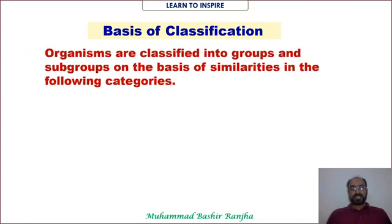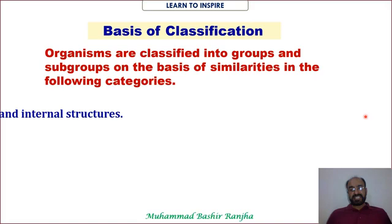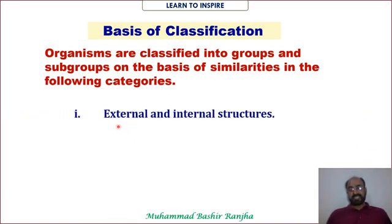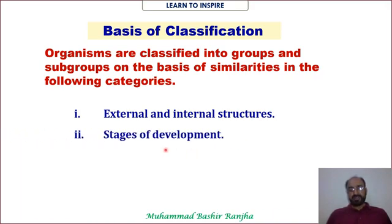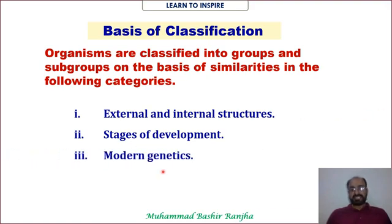Organisms are classified into groups and subgroups on the basis of similarities and differences in the following categories. Number one: external and internal structure — basically external morphology and internal morphology, i.e., morphology and anatomy. Number two: stages of development, called embryology. Number three: modern genetics — the study of DNA, looking at which organisms share more characters.